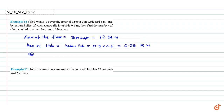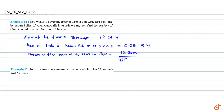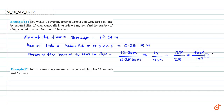Number of tiles required to cover the floor equals 12 square meters divided by 0.25 square meters. That is 12 divided by 0.25, equal to 1200 divided by 25, equal to 4800 divided by 100, equal to 48.